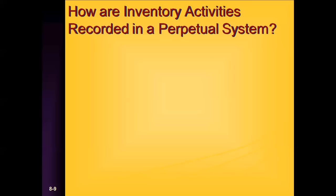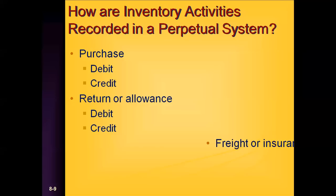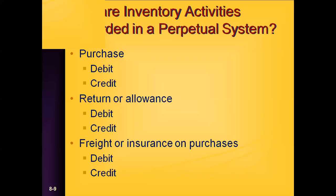How would it work in a perpetual system? In a perpetual system, as opposed to debiting your purchases account, you would debit your inventory account as soon as the transaction occurred. Similar to the periodic system, you would credit your accounts payable account. In terms of a return or allowance, you would debit accounts payable, similar to the periodic system, but you would credit the inventory account. Last but not least, for freight and insurance, you would debit the inventory account and credit accounts payable.